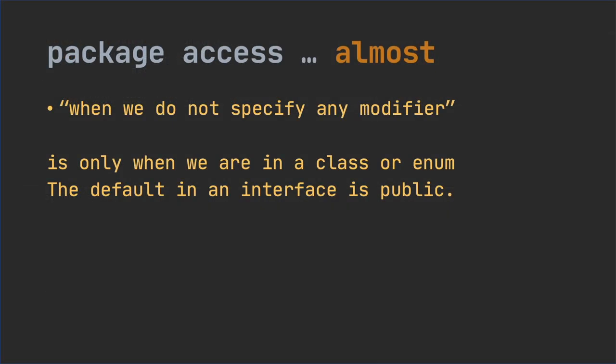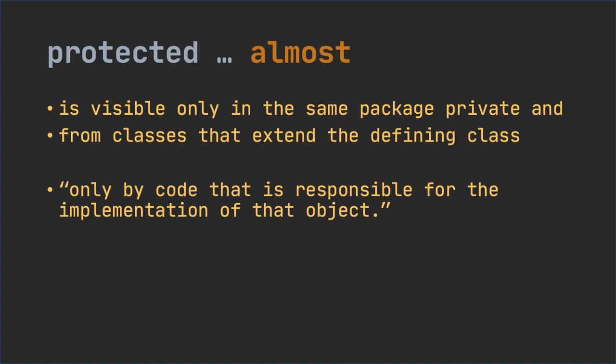Here the almost is not that big of an issue, but with some Java developer position interviews, this small thing may still make the difference between getting the job or a refusal. The statement that the default access is package access when we are not specifying any modifier is only true when the member is in a class. If the member is in an interface, then the default is public.